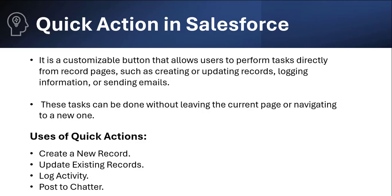Here are some uses of quick actions. We can create a new record, update an existing record, and we have log activity — using that we can log calls to other users. We can also use Post to Chatter, which lets us post any activity or ask a question without leaving the current page.